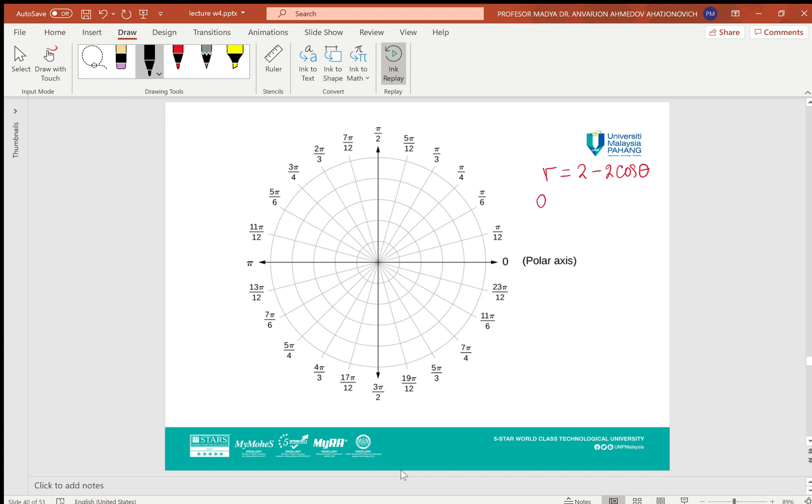So let's make some points. For example, θ = 0, r = 2; θ = π/3, r = 1; θ = π/2, r = 2; θ = 2π/3, r = 3; θ = π, r = 4. You can check these values.